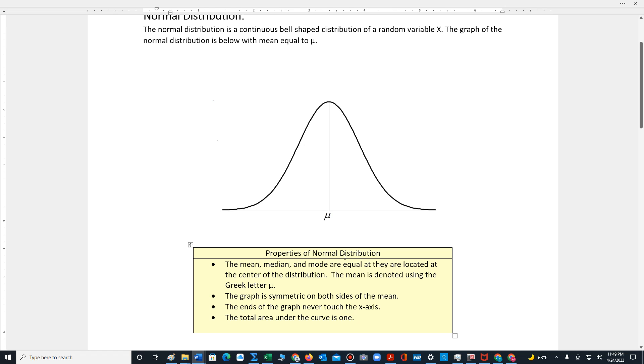Some key properties of the normal distribution: first, the mean, median, and mode are all equal and located at the center of the distribution. The mean is denoted using the Greek letter mu.